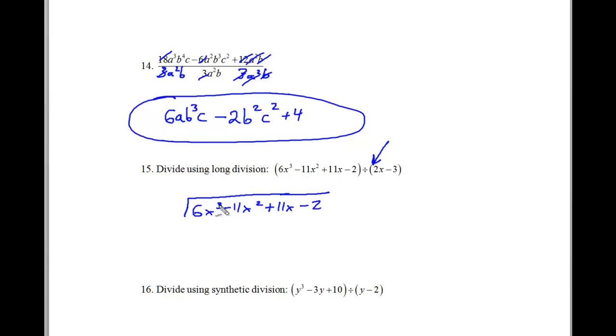I was careful to make sure that there were no powers skipped. x cubed, x squared, x and 2. And on the outside, I'll have 2x minus 3. Now the first question I'm going to ask is, how many terms are here? And the answer is 2. So we're going to start right here at the arrow.